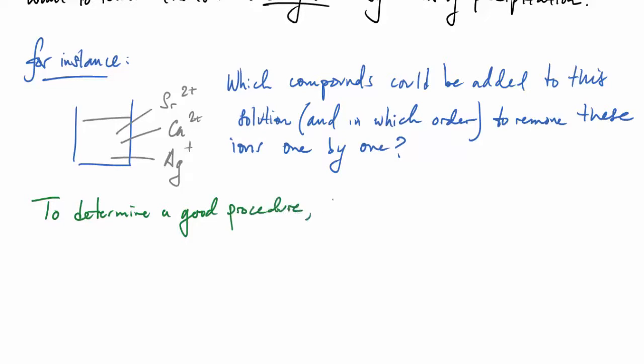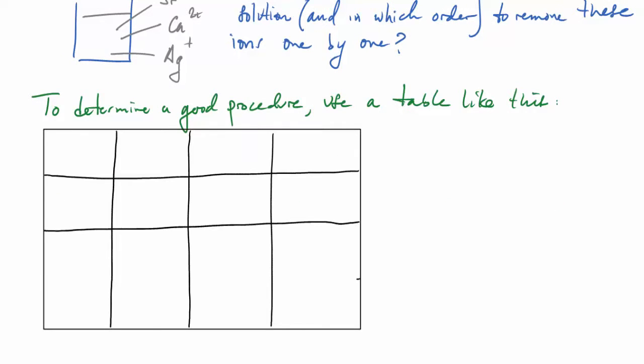In order to get a good procedure, I'd highly recommend you use a table that looks like this one. On the left-hand side we'll have the metal cations. The idea is to refer to our table of solubility rules, which you all recall from before, and try to determine which anions to add.